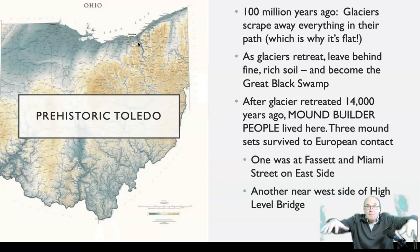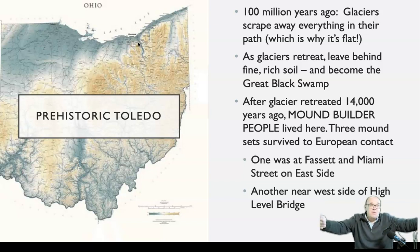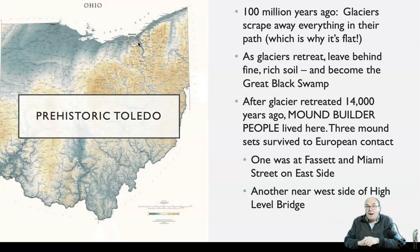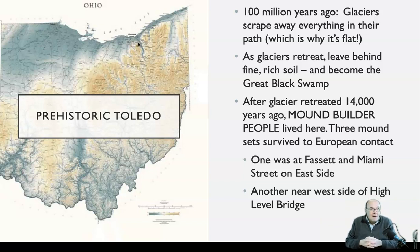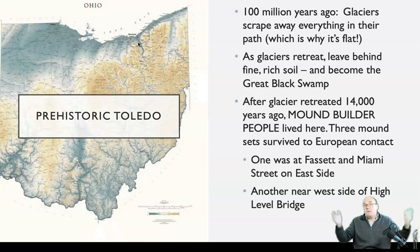Where the glacier stopped, it deposited a bunch of material called a moraine — the end terminal of the glacier. When the glaciers retreated over millions of years and melted, they left behind a very rich, very fine soil, which created a clay substrate underneath. That is why our area becomes the Great Black Swamp, because that clay soil retains moisture on top, allows lots of trees and vegetation to grow, and as those decompose, they create this amazingly fertile soil.